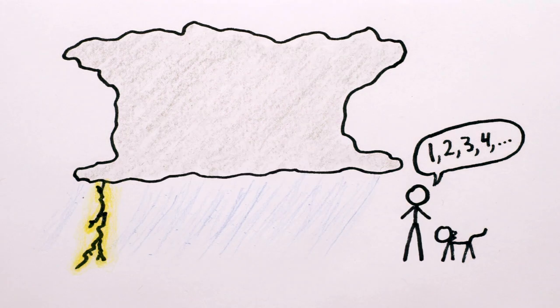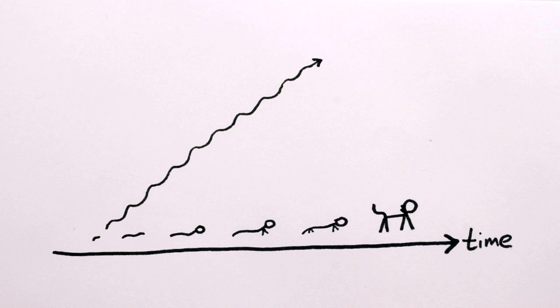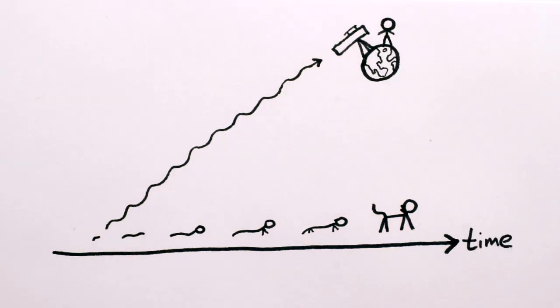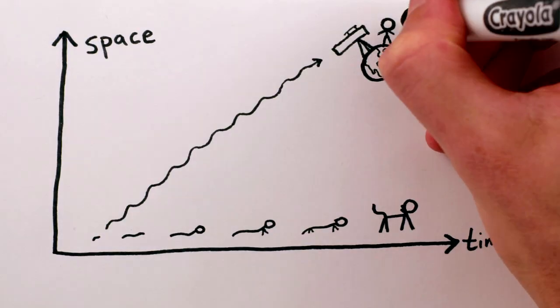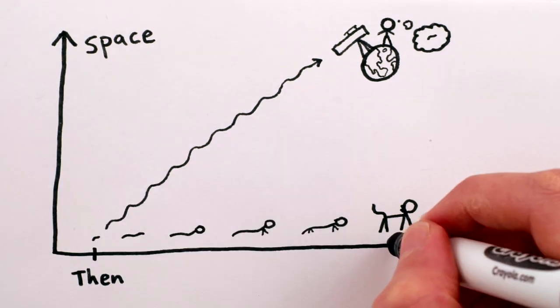But wait. It's better than that. Since light takes time to travel across the universe, when we point our telescopes at something really far away, we're actually seeing that part of the universe as it was when the light was emitted.